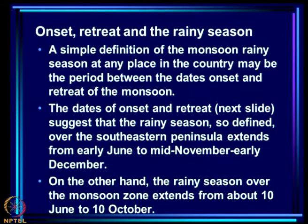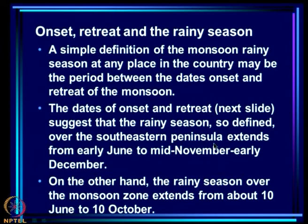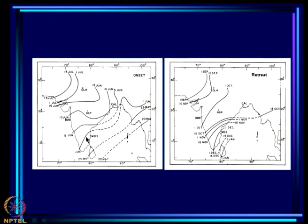We have seen that the rainy season varies from place to place. A simple way to define the rainy season at any place may be the period between dates of onset and retreat of the monsoon. The onset date varies from 1st June to 15th July, and the dates of retreat vary from 1st September to about early December in Tamil Nadu coast. So the rainy season over the south-eastern peninsula extends from early June to mid-November or early December.